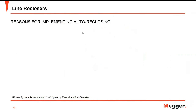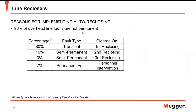Why do electric utilities implement automatic reclosing? First, because more than 90 percent of faults are transient. Transient faults can be caused by lightning or foreign objects touching the conductors. 80 percent of the time the fault is cleared on the first reclosing, yielding a successful first auto-reclosing. Some foreign objects like tree branches that fall on conductors may take additional time until they get burned away — this may happen after a second or third breaker tripping.